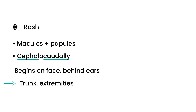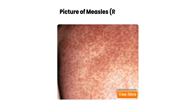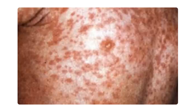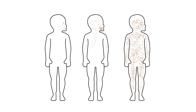Here are a few pictures showing the rash and its distribution. You can see it starts on the face, behind the ears, and then later spreads downward, eventually going all the way down to the lower extremities.